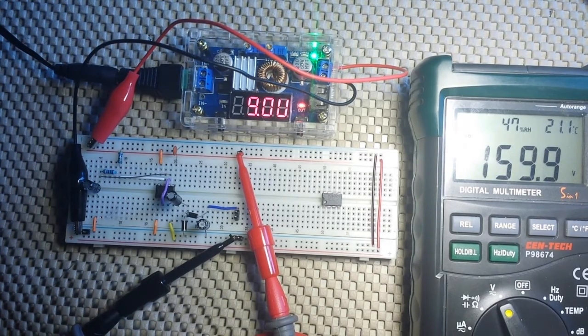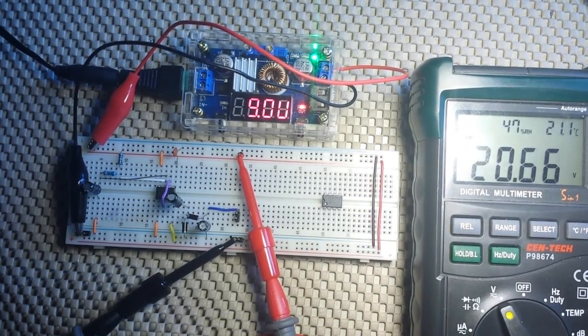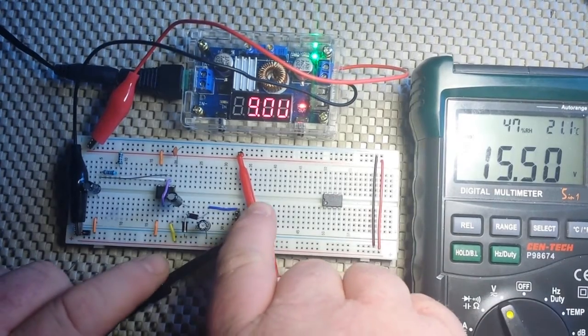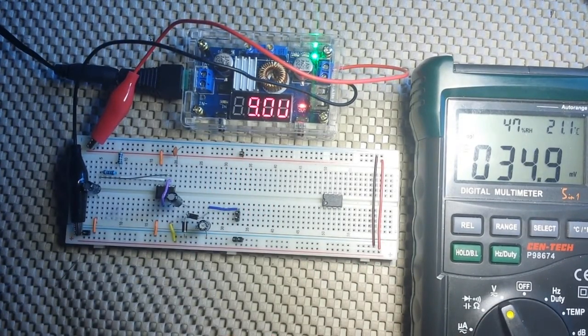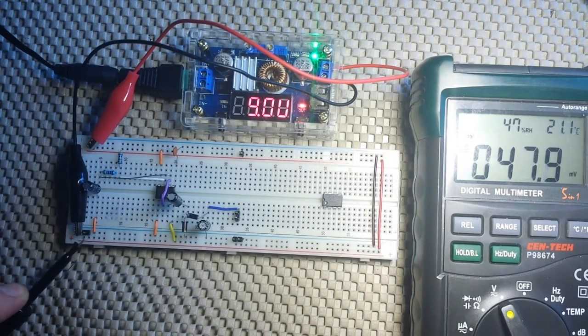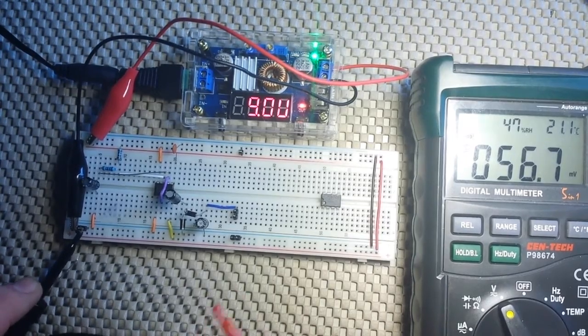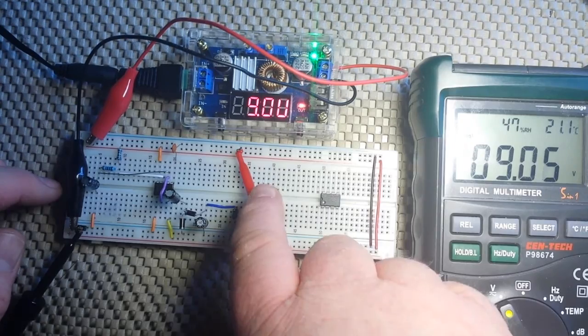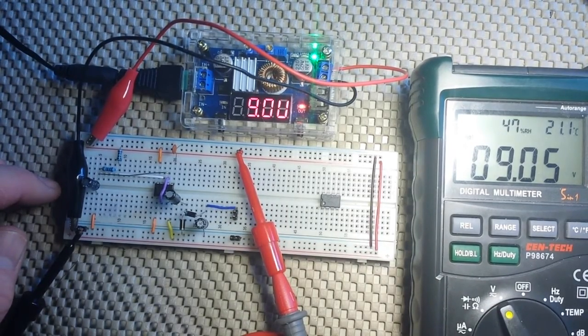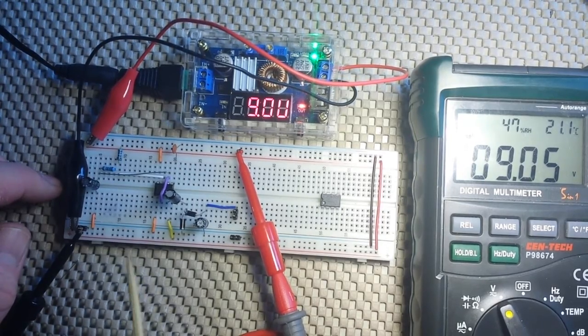it was showing 9 volts. Let me try this again because I'm not sure exactly where the problem lies. Is it the meter? Okay. Might have just been that ground connection. So, there we're showing 9 volts.